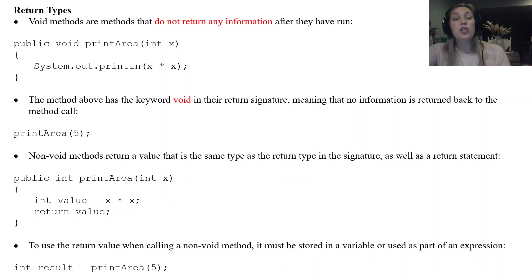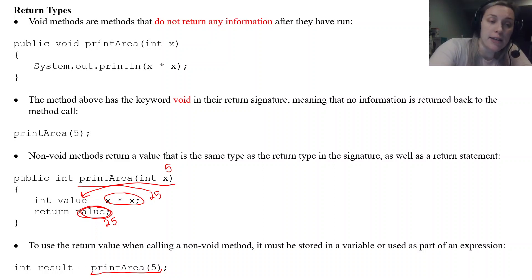Okay now to use that return value when you call a non-void method it must be stored in a variable or used as part of an expression. Okay so we'll see both examples here. You'll see us calling a non-void method and then taking what's returned and storing it in a variable. So I still call the method as print area 5. So print area X gets the value of 5. So when I do X times X I get 25. 25 gets stored into value it's an integer. And then I'm going to return 25.